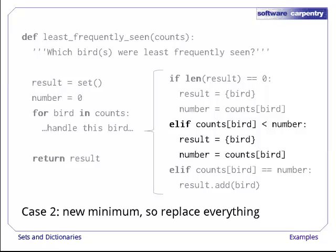In our second case, the number associated with the bird we're processing is a new minimum. When this happens, we throw away the set of birds we've seen so far and replace it with a set containing only the name of this bird and assign the new lowest score to number.